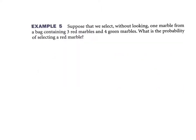Example five. Suppose that we select without looking one marble from a bag containing three reds and four greens. What is the probability of selecting a red? Okay, this is the math, this is theoretical. There are seven marbles all together, that always goes in the bottom. How many of them are our event or are red? There are three of them. And that's it, three out of seven.